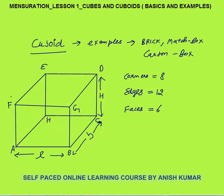What are the corners? A is a corner, B is a corner, C is a corner, D is the 4th corner, E is the 5th corner, H is the 6th corner, F is the 7th corner, and G is the 8th corner. These are the corners of the cuboid, so we have 8 corners in every cuboid.